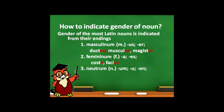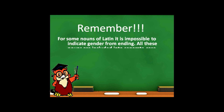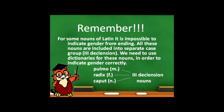Neutrum nouns can have endings -um, -u, or -on. Examples: cavum, genu, neuron. Remember, for some nouns of Latin it is impossible to indicate gender from the ending. All those nouns are included in the separate group called third declension. We need to use dictionaries for these nouns in order to indicate gender correctly, and we have to remember them. Examples: pulmo – masculine noun, radix – feminine noun, caput – neutrum noun. All these nouns are third declension nouns.